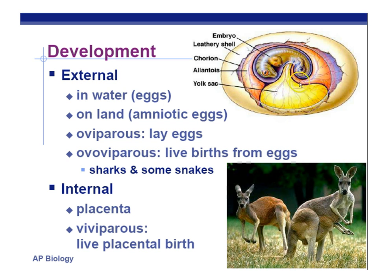When you have a placenta — an inner lining of the uterus with many blood vessels attached to the umbilical cord — you can keep delivering nourishment to the developing young, allowing them to develop much longer. So mammals can develop much longer internally than reptiles and birds within an egg.